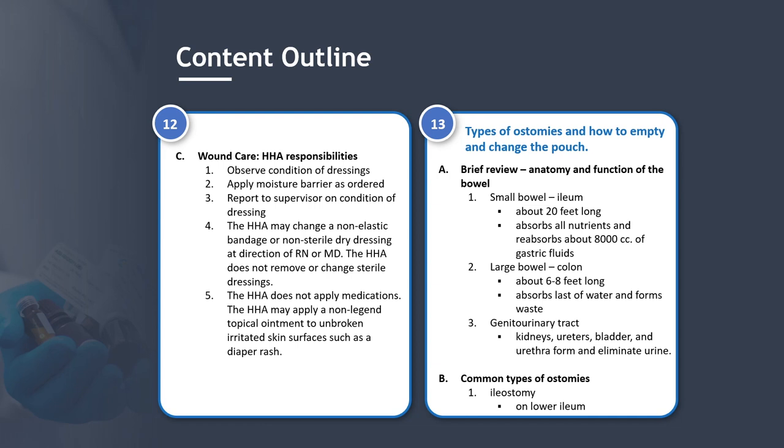Section 13: Types of ostomies and how to empty and change the pouch. A brief review of anatomy: the small bowel, or ileum, is about 20 feet long — it absorbs all nutrients and reabsorbs about 8,000 cc's of gastric fluids. The large bowel, or colon, is about 6 to 8 feet long and absorbs the last of the water and forms waste. The genitourinary tract includes the kidneys, ureters, bladder, and urethra — these form and eliminate urine.